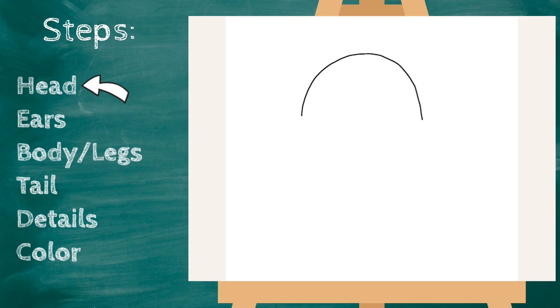Once you have that arch, we're gonna go right in the middle of it and let's go down to about here and put a dot. That's gonna be the point where his nose will be. So from that dot, I'm gonna draw a curved line that connects to our arch.